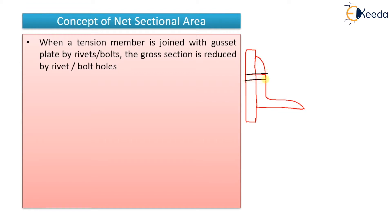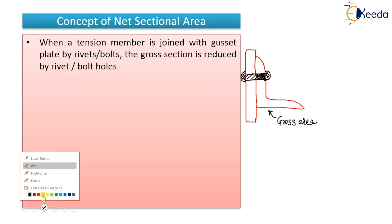When you want to find out the area of this angle, you will have to deduct the area of the hole because that area is getting drilled to insert the bolt. So this much area is getting reduced. The total area of this angle is known as gross area, but if you subtract the area of the bolt hole, you get the net area.